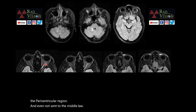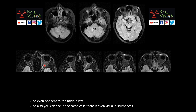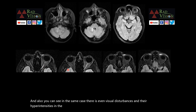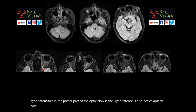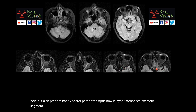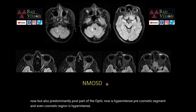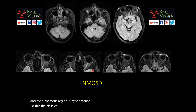In the same case, there are visual disturbances and hyperintensities in the posterior part of the optic nerve. Hyperintensities are noted in the optic nerve — predominantly the posterior part of the optic nerve — and the pre-chiasmatic segment and chiasmatic region are also hyperintense. This is the classical case of NMOSD.